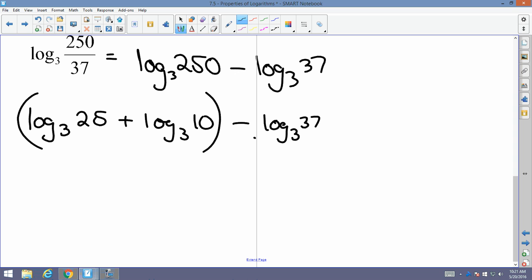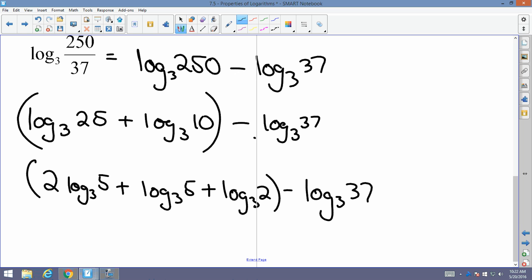25 is 5 squared, right? So, I'm going to break this down to 2 times log base 3 of 5. Very good. Because 5 squared, the power of 2 goes to the front, because when I expand exponents, it goes to multiplication. Plus, log base 3 of 5, plus log base 3 of 2, minus log base 3 of 37. Bingo, you're done.